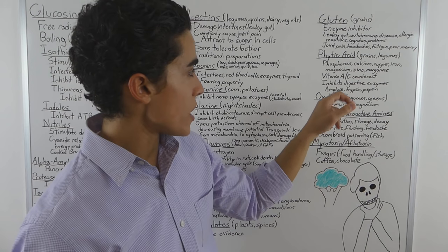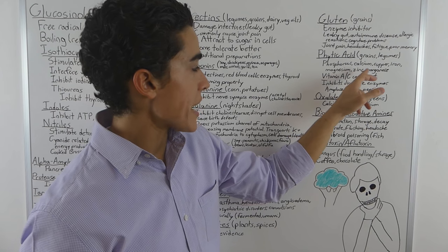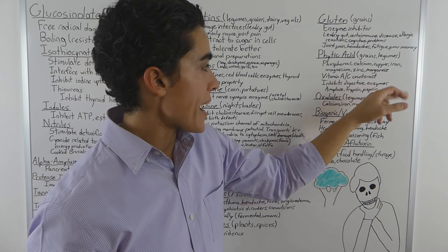Phytic acid is very high in nuts and seeds as well. But phytic acid primarily inhibits phosphorus, calcium, copper, iron, magnesium, zinc, and manganese.